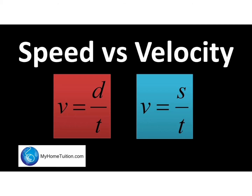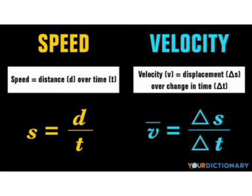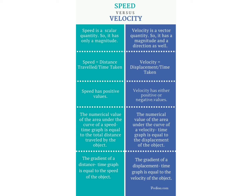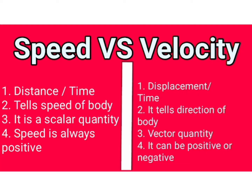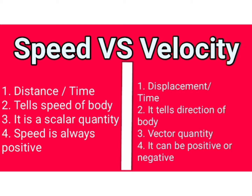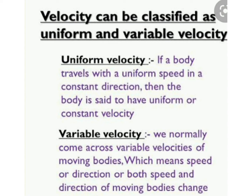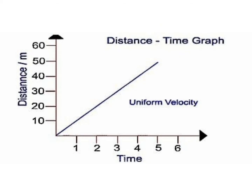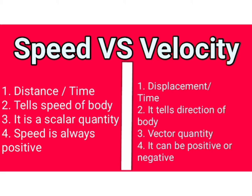Now we will look at the difference between speed and velocity. Speed has only magnitude — no specific direction. But velocity has both magnitude and direction. In fact, velocity of a body is its speed in a given direction. Speed is a scalar quantity, while velocity is a vector quantity. The direction of velocity is the same as the direction of displacement of the body. Speed is always positive, but velocity can be positive or negative.